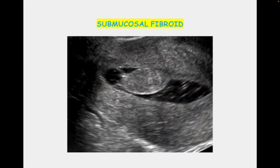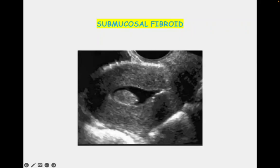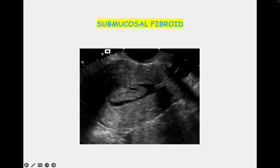Here you can see a submucosal fibroid — the clear capsule of the fibroid is visible, arising from the anterior wall of the uterus. The white areas are air bubbles, which sometimes come along with the saline. Another picture shows a fibroid from the posterior wall, and here you can also see some degeneration occurring within the submucosal fibroid.